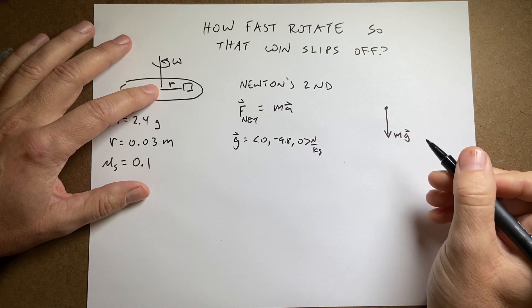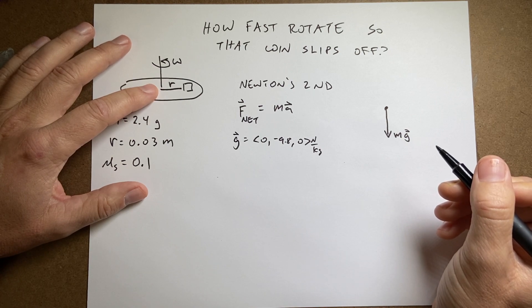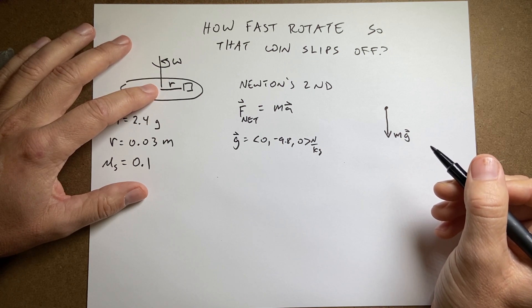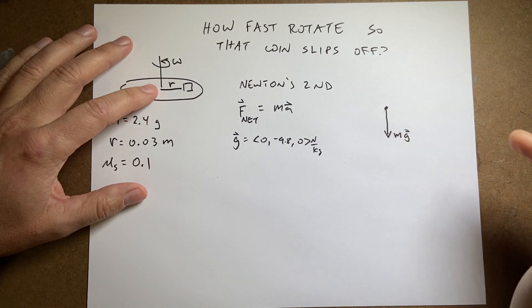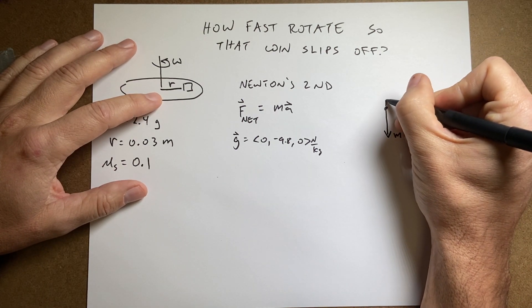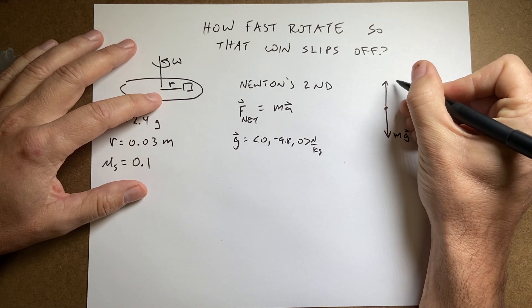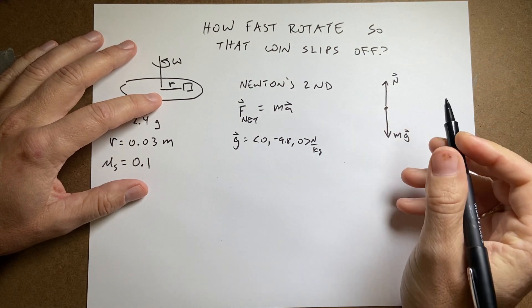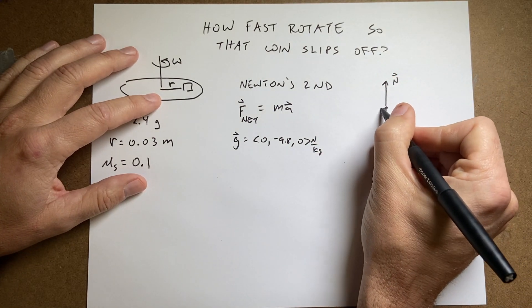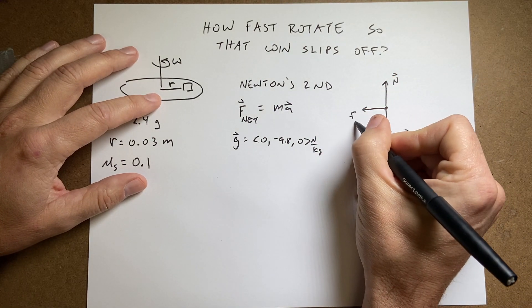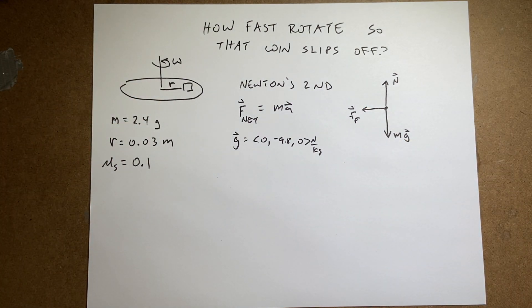Then that's the only long-range force. What's touching the penny? Well the disc is. So the disc actually pushes up and we'll call that the normal force. The disc also has a frictional force pushing it to the side. And I'll call that F friction. And that's it.